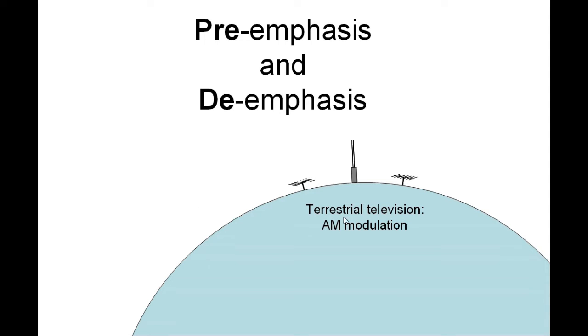First we had terrestrial television with AM modulation, and terrestrial means earth to earth, to a tower somewhere located on the planet. However, when satellite television started, they used FM modulation. So all these dishes are pointed to the satellite with FM modulation. And that's important, FM is different than AM.